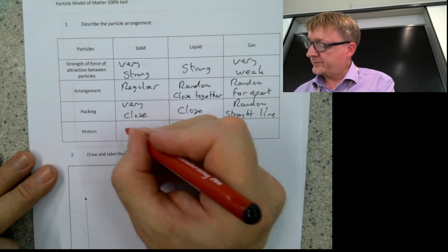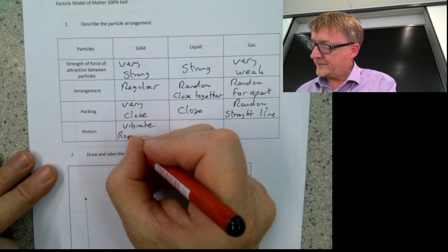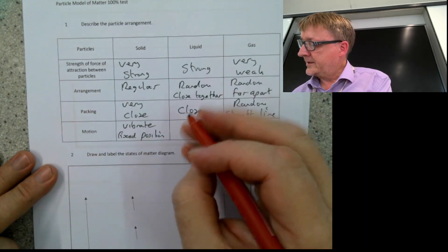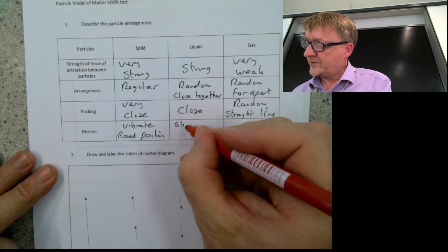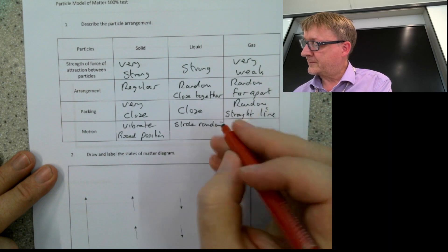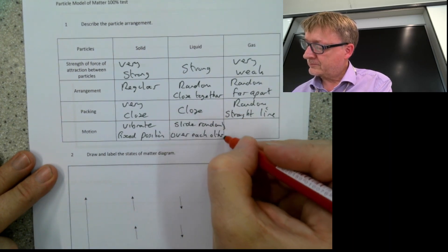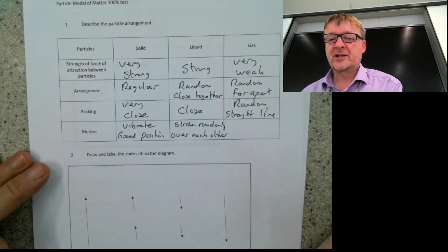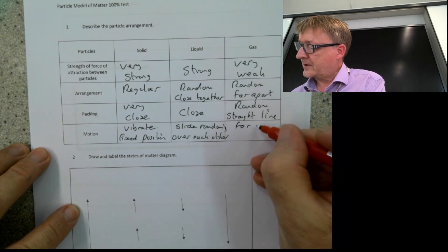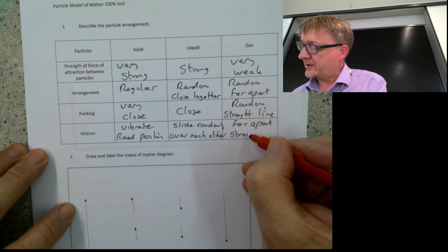For motion: in a solid, it vibrates in a fixed position. In a liquid, particles slide randomly over each other — a constant motion that's not too dramatic. In a gas, they are far apart and moving in a straight line.